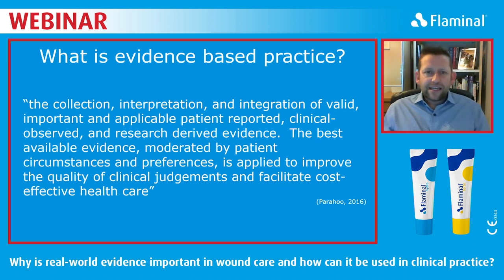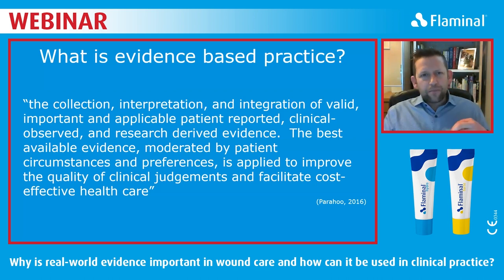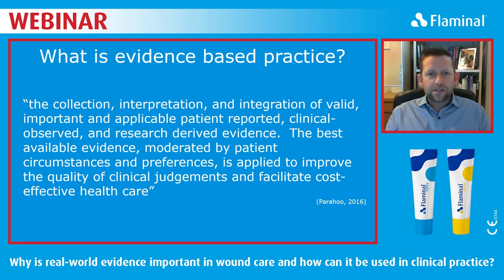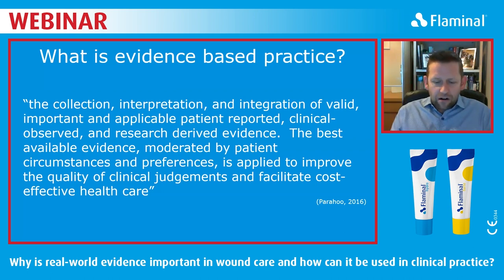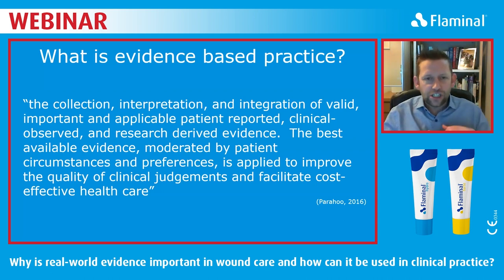The first thing we've got to understand is evidence-based practice. When we look at it in the context of healthcare and wound care, we've got to look at some literature to support what we're seeing. The important things are around this collection and interpretation of data. We're talking about things that are patient-reported and clinically observed and research-focused. At the core of this definition, we also talk about the quality of clinical judgment and producing the best possible outcomes for our patients.